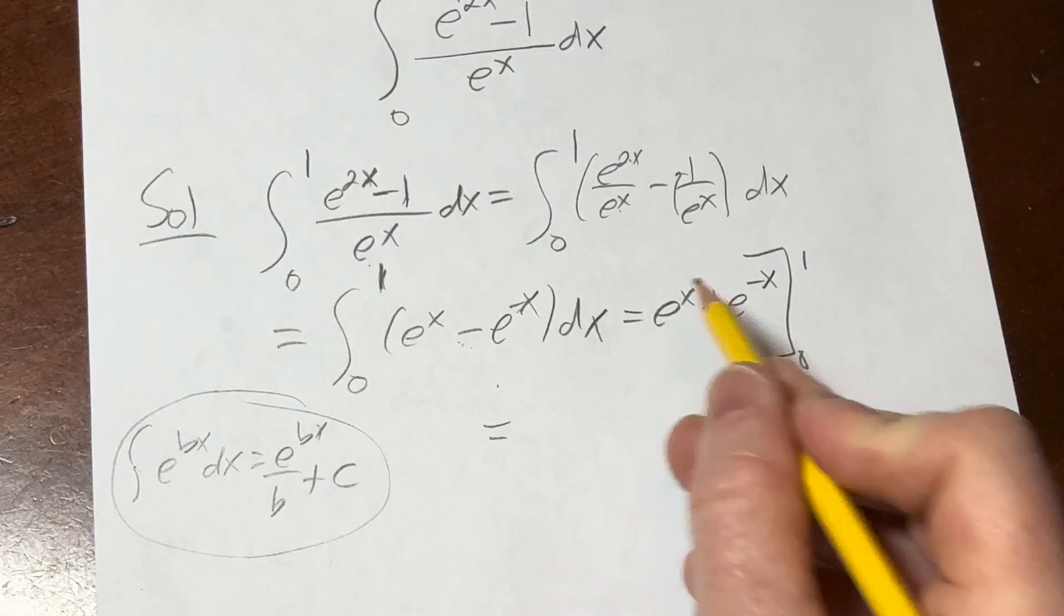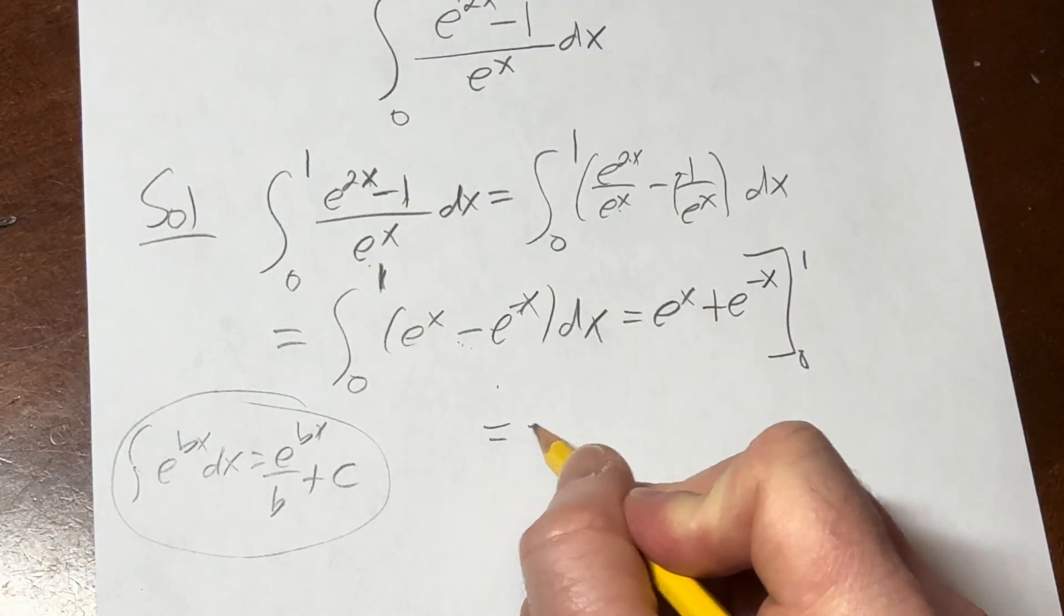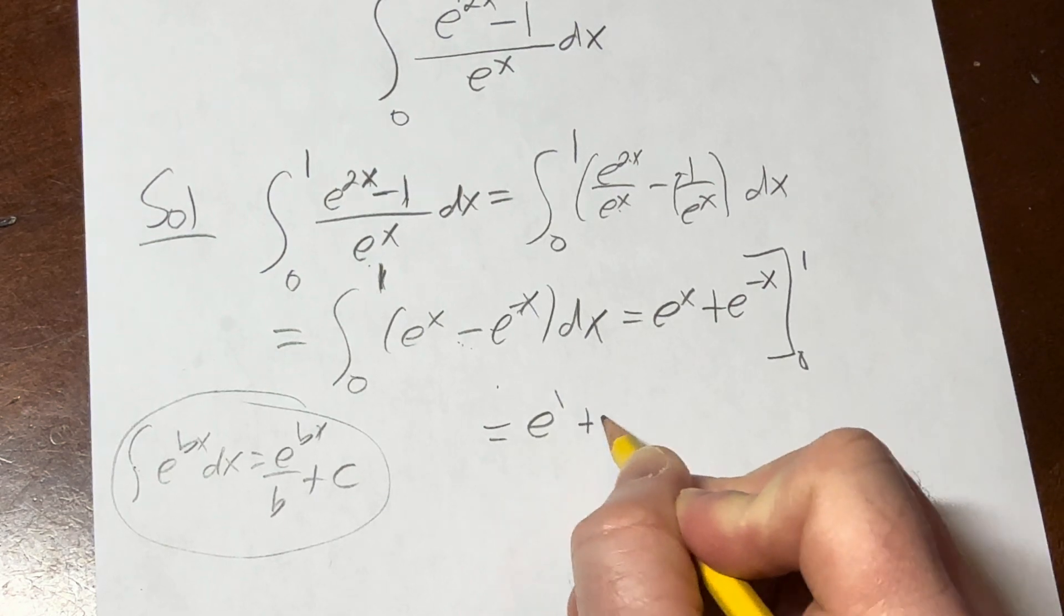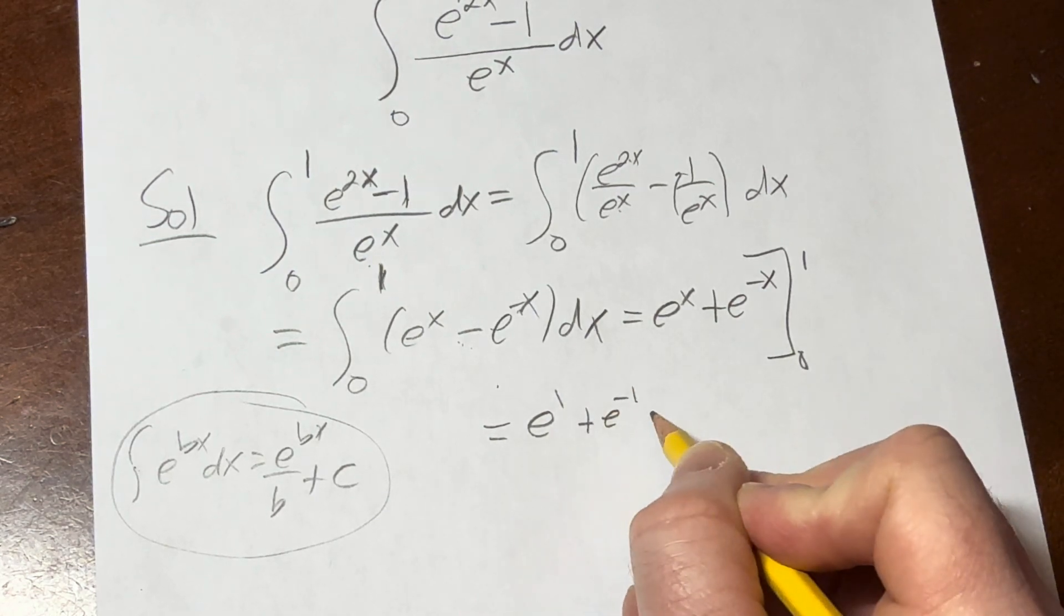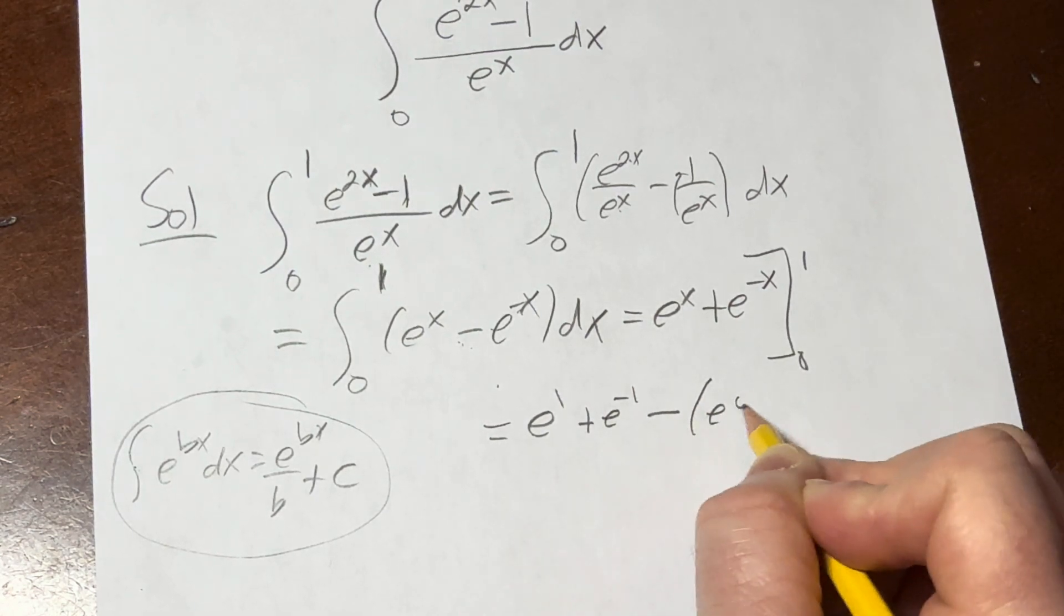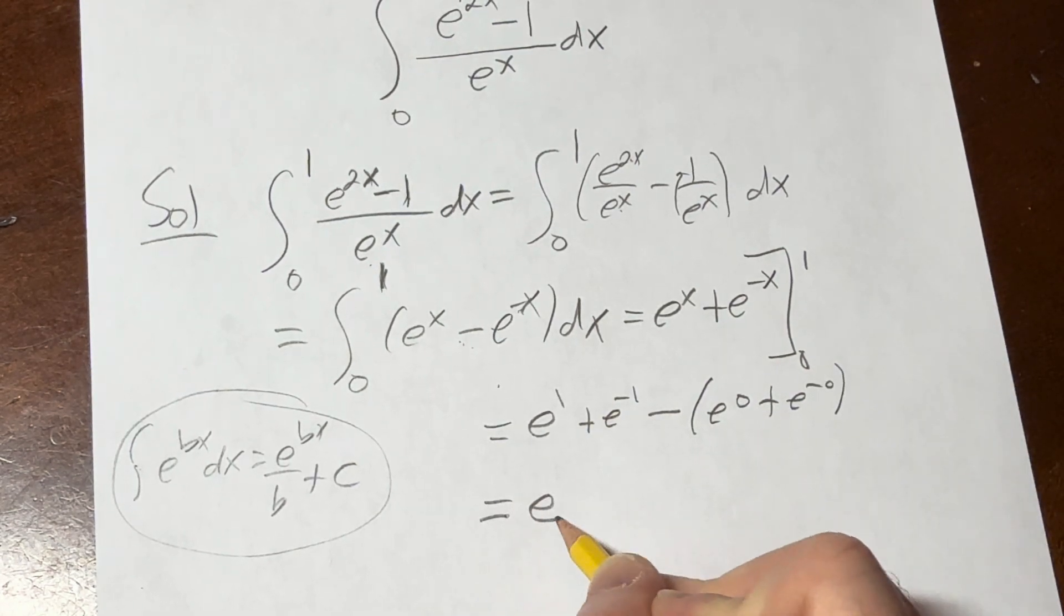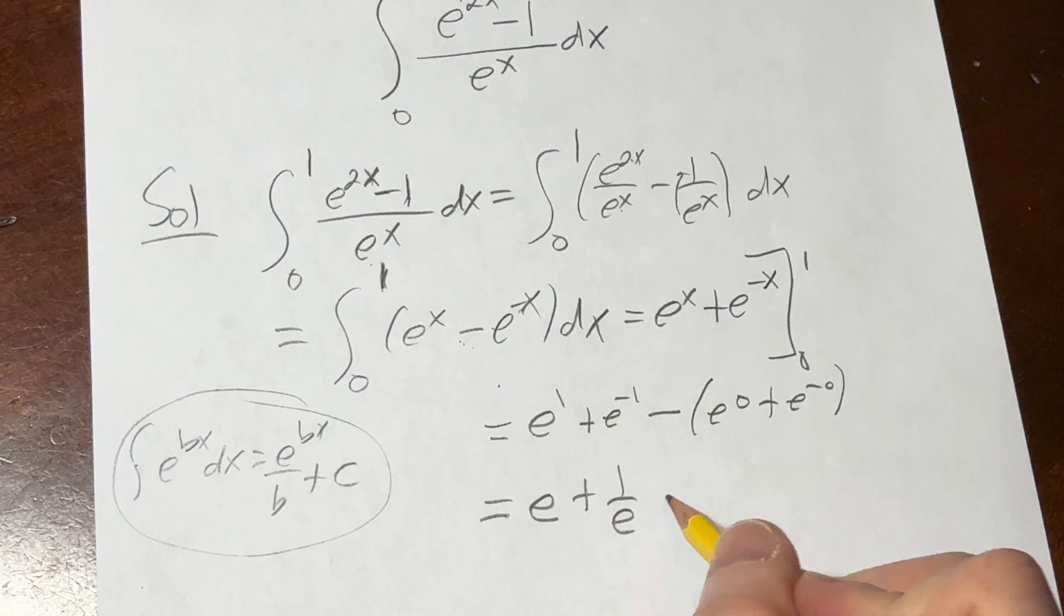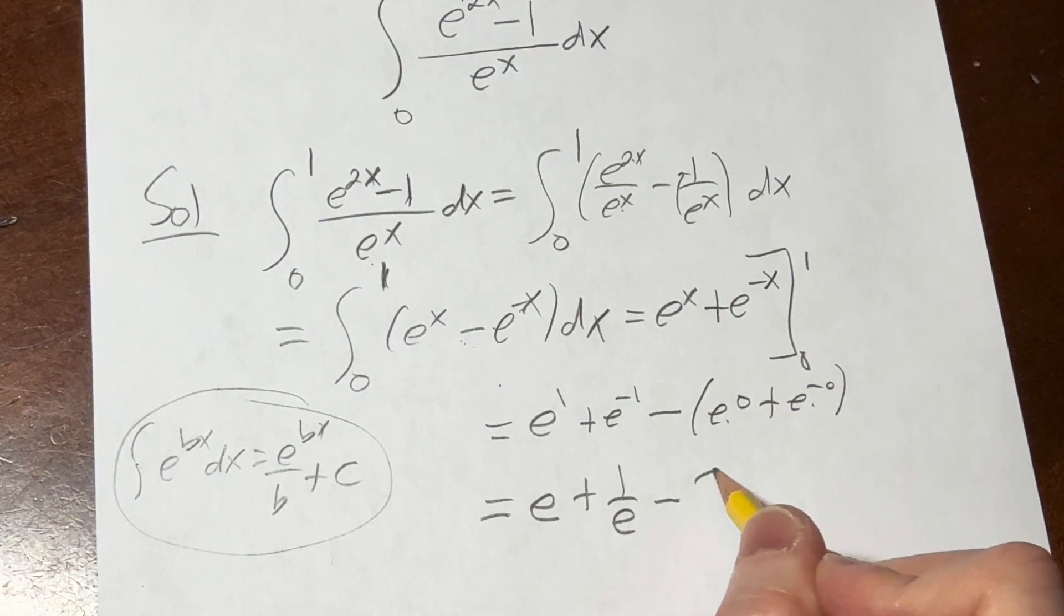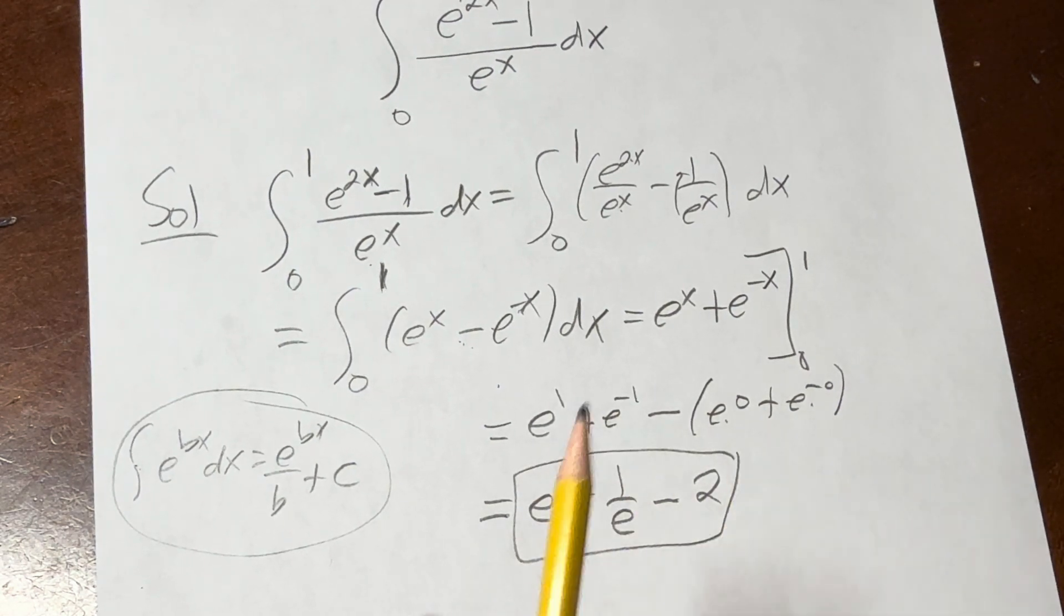This is equal to - plug in 1 first, subtract and plug in 0. So it'll be e to the 1 plus e to the negative 1 minus e to the 0 plus e to the negative 0. This equals e plus 1 over e minus 1 plus 1 is 2. And that would be the final answer.